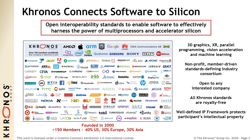We have been working on standards for 20 years and have almost 160 members, everyone from the largest companies down to small startups, spread around the world including many companies in China including Huawei, Alibaba and others. We are open to any company who wishes to join to have a voice and a vote in how Khronos standards evolve.